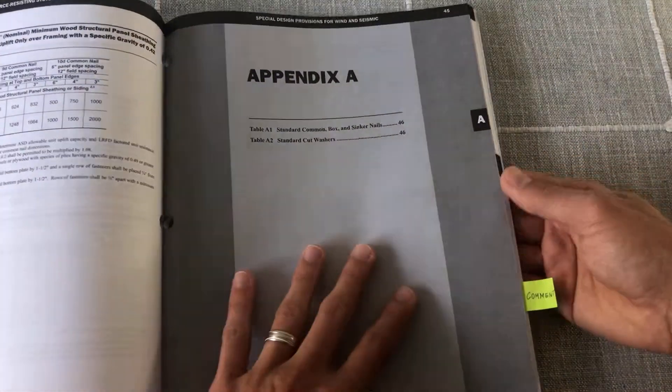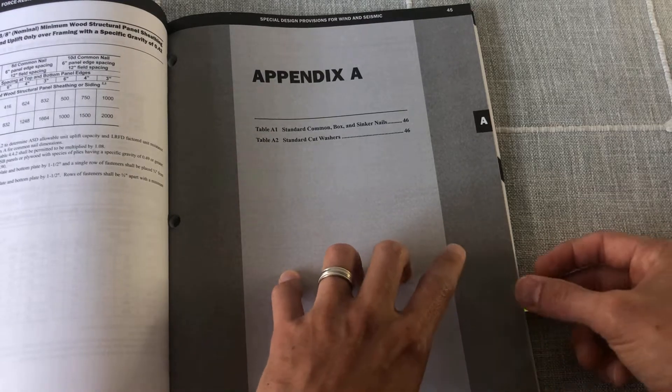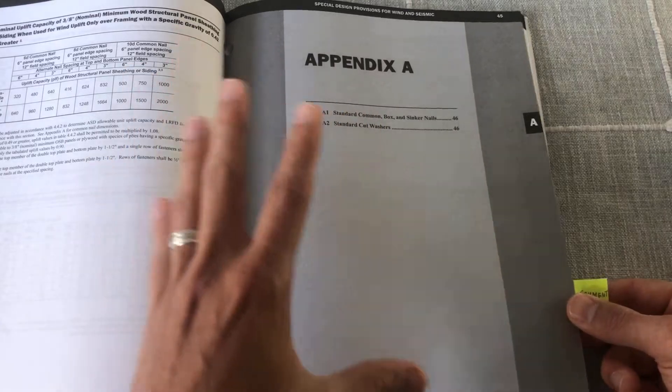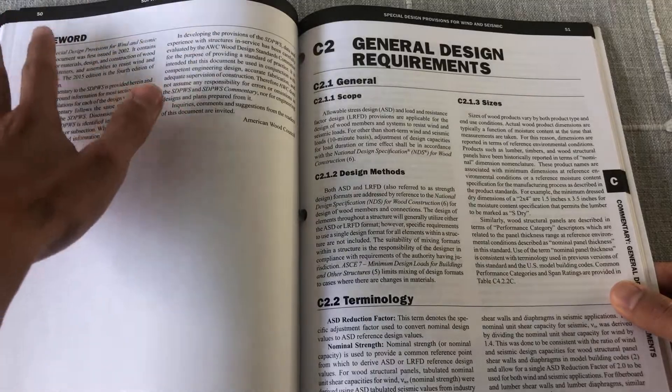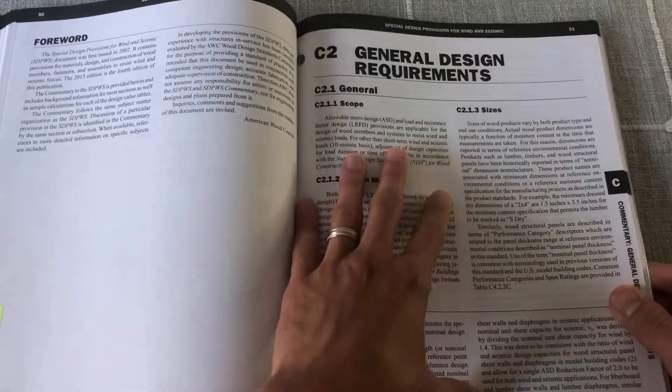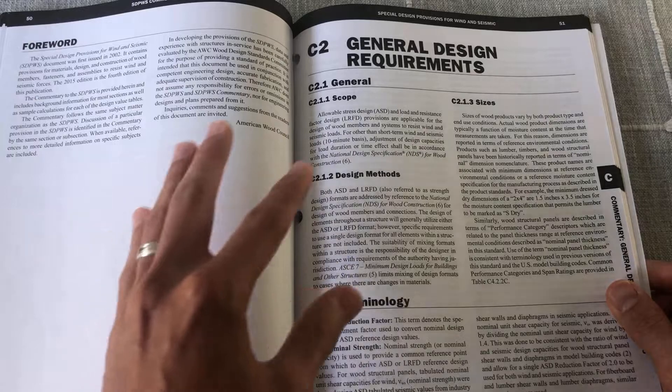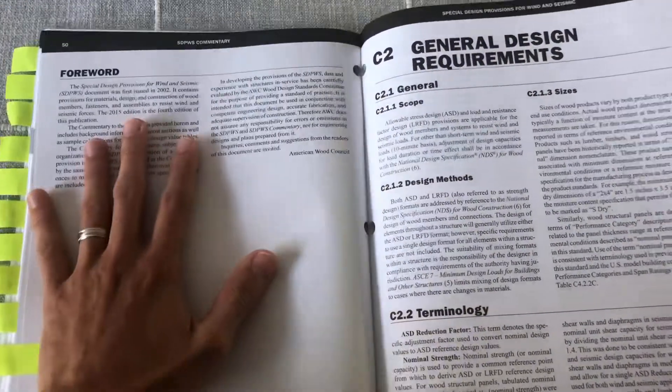The last tab that I have is just the commentary. This one is especially important because SDPWS is so specific for wind and seismic provisions that if you're not familiar with anything from the provisions, this is the first place you need to come. It's describing why they provided certain things in the main part of the book or the provision.